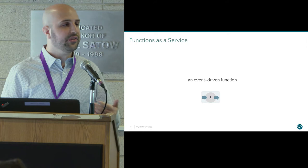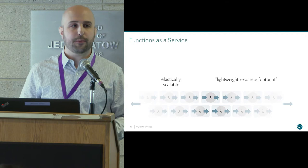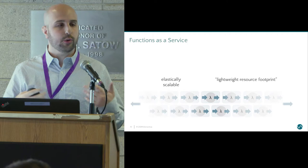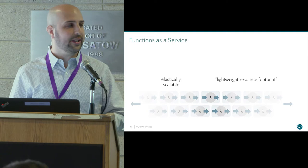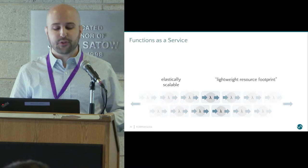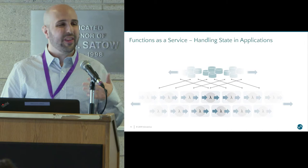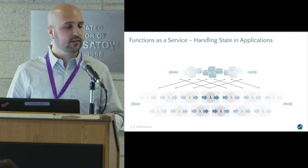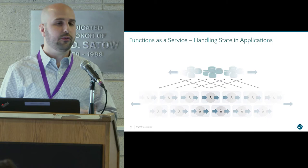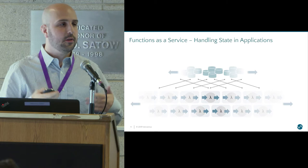One of the most interesting properties these systems bring to the table is their elastic scalability. As load increases, a function as a service will automatically scale up and spawn more instances so it can handle that load. And when they're no longer needed, those instances will go back down. This means it has a very lightweight resource footprint — it only uses what's necessary at any given moment to solve the problem and no more. While that sounds really good, there's also a reason why this hasn't quite taken over the world yet, and that's because most real systems need to do more than simply invoke a single function or do processing based on the information encoded within a single event. Most real systems are stateful.